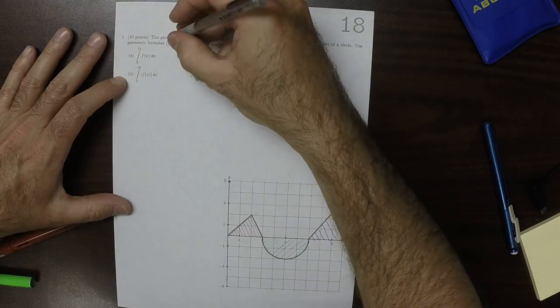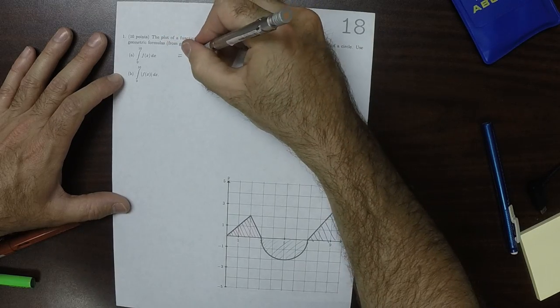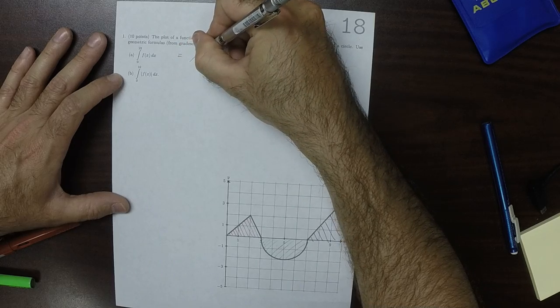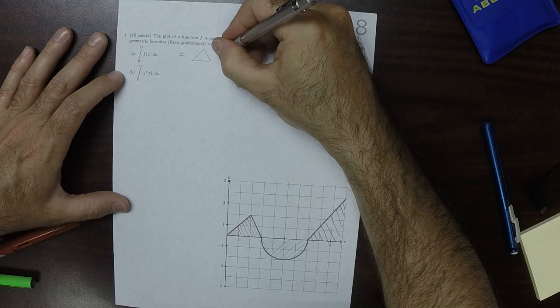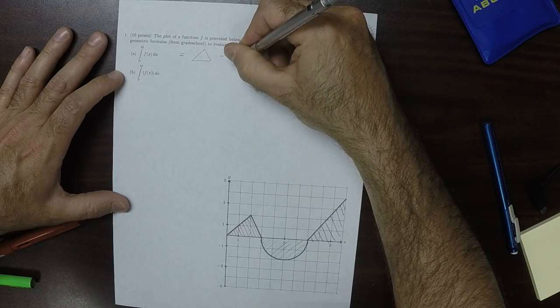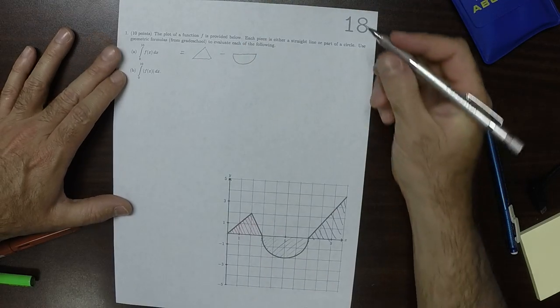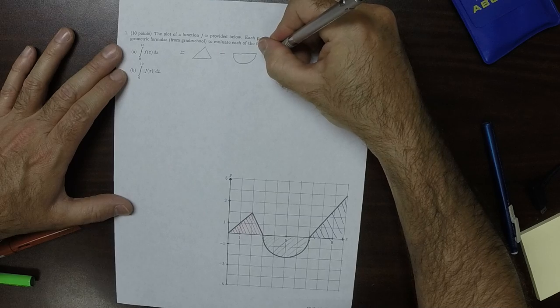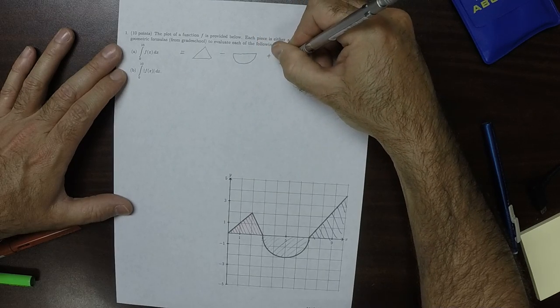So as for part A, it's going to be the area of that first triangle minus the area of that semicircle. It's going to be minus because that area is below the horizontal axis, and then plus the area of that triangle.